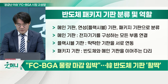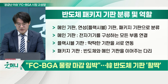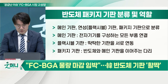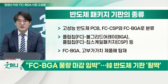패키지 기판은 반도체와 메인 기판을 이어주는 다리 역할을 하며, 반도체를 외부 충격으로부터 보호하는 역할도 합니다. 패키지 기판 중에서 고성능 반도체를 주로 다루는 PCB는 FCCSP와 FCBGA로 분류됩니다. FC는 플립칩, BGA는 볼 그리드 어레이, CSP는 칩 스케일 패키지입니다. 이 두 가지가 고성능 반도체를 밑에서 받쳐주는 역할을 합니다.